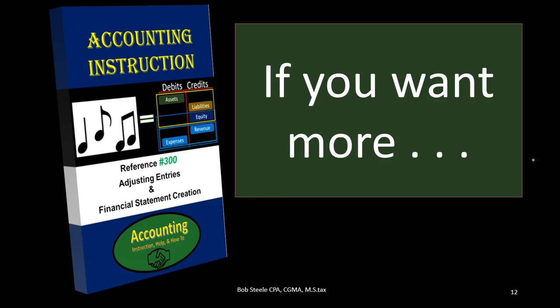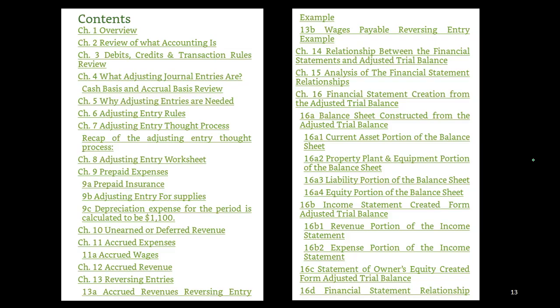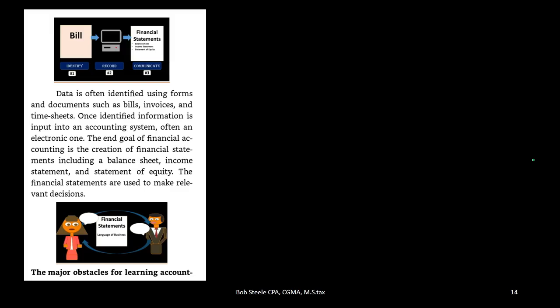If this has been helpful and you want to learn more about the adjusting journal entry process, I recommend taking a look at the book account instruction reference number 300. One of the key components is a list of the material in a relevant order to help you zero in on what you need, providing reading as well as links to free resources including instructional videos, games, and test banks all related to the topics you are concentrating on.